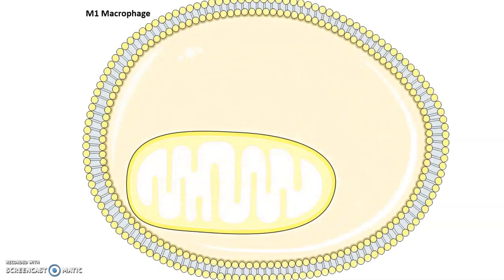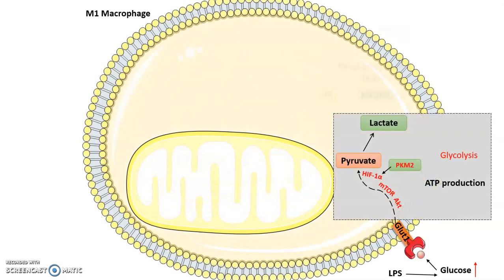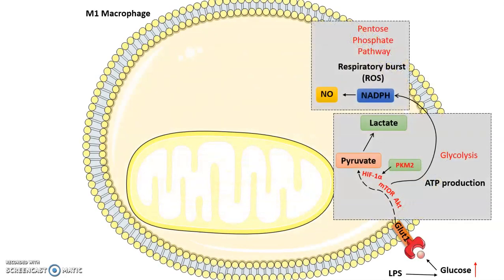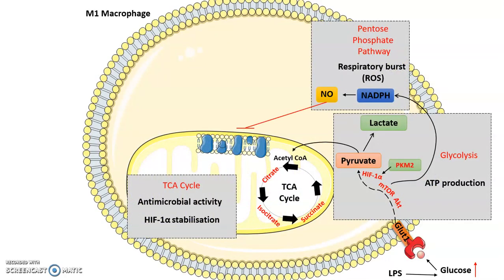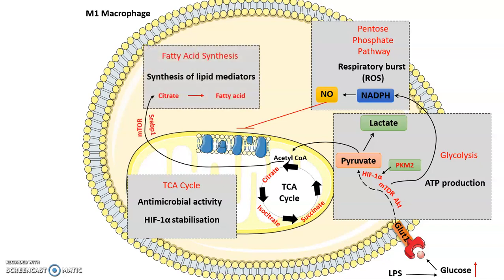We know metabolism regulates many aspects of immune functions, such as pro-inflammatory mediator production, and circadian rhythms play a role in regulating metabolism. Our lab has shown that circadian disrupted macrophages have significantly higher glycolysis, and this is characterized by increased HIF-1 alpha and IL-1 beta expression.